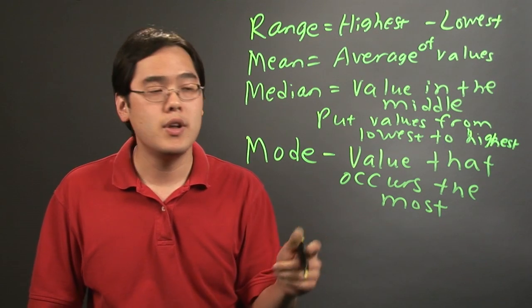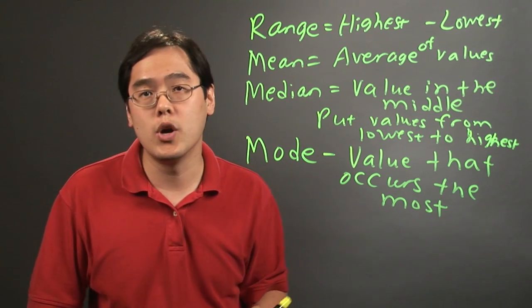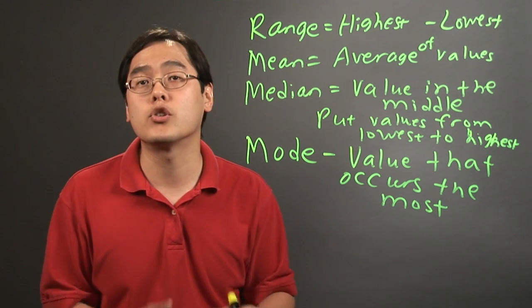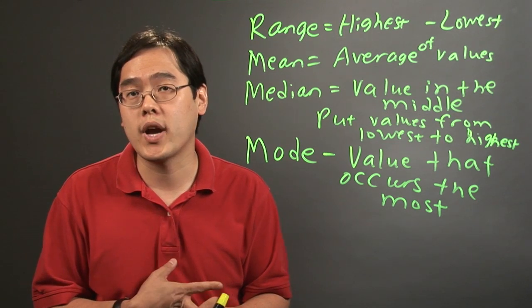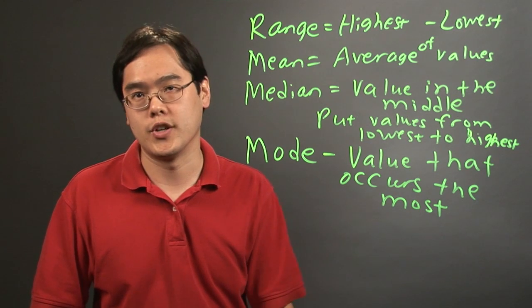So you want to find the number that you see the most number of times and that'll give you the mode. Now if there's a tie between two or more figures, it can be called bimodal or trimodal. It depends on what kind of data you have to work with. But basically just look for the number that occurs the most and you'll be good to go.